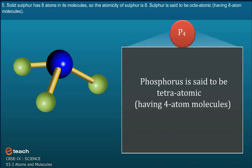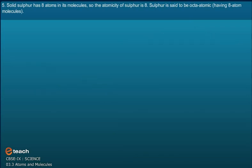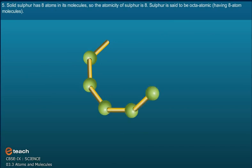Solid sulphur, S8, has eight atoms in its molecules. So the atomicity of sulphur is eight. Sulphur is said to be octaatomic, having eight atom molecules.